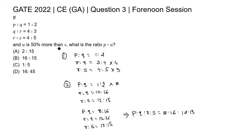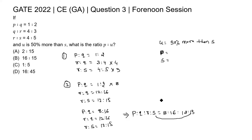U is 50 percent more than S. Since the corresponding value of S is 15, U equals 15 plus 50 percent of 15, which is 15 plus 7.5, giving U equal to 22.5.